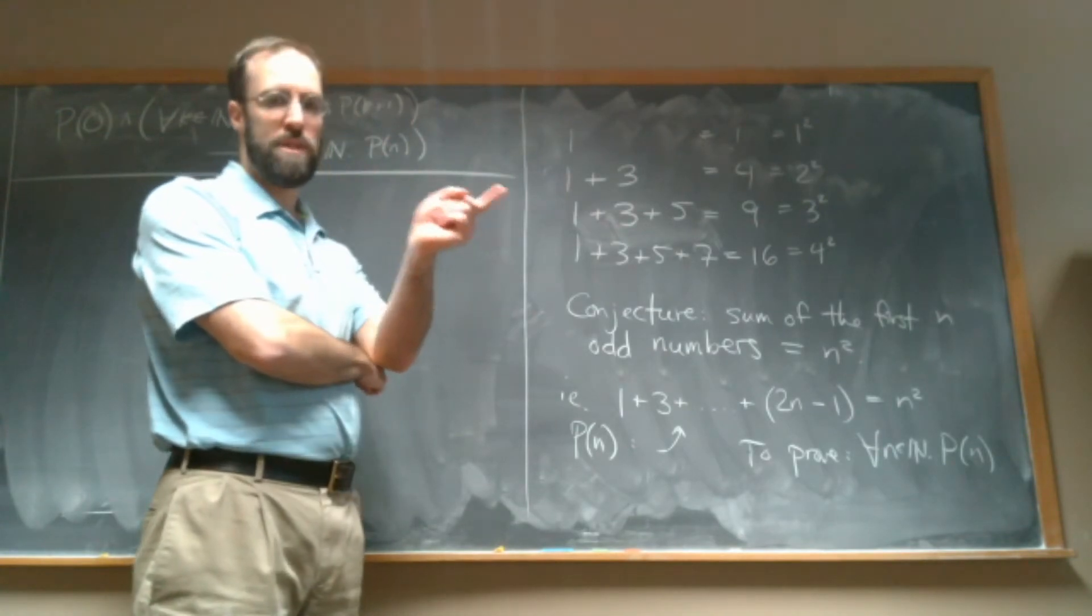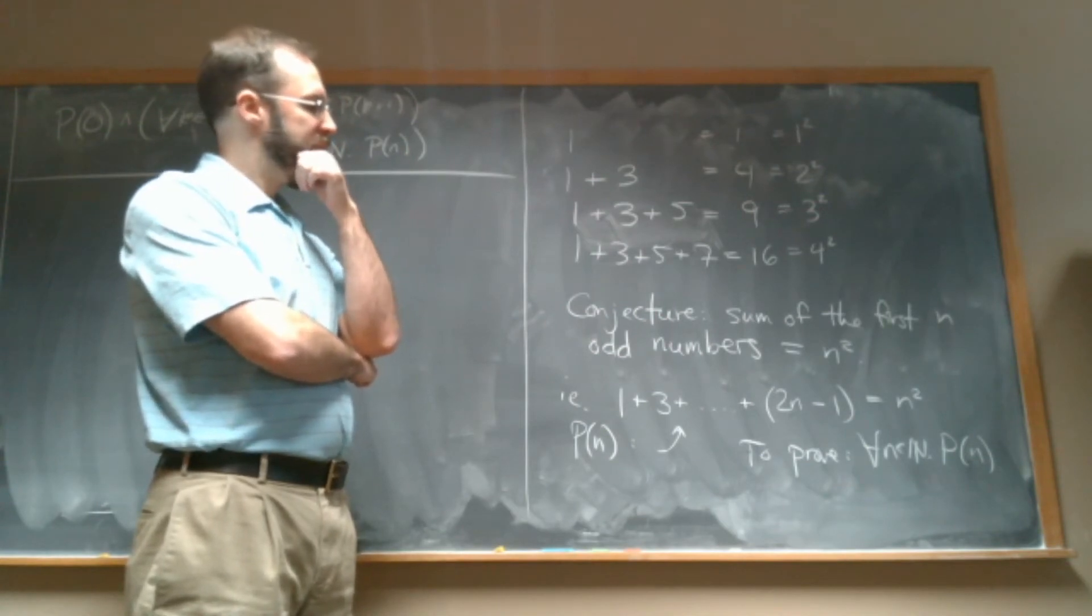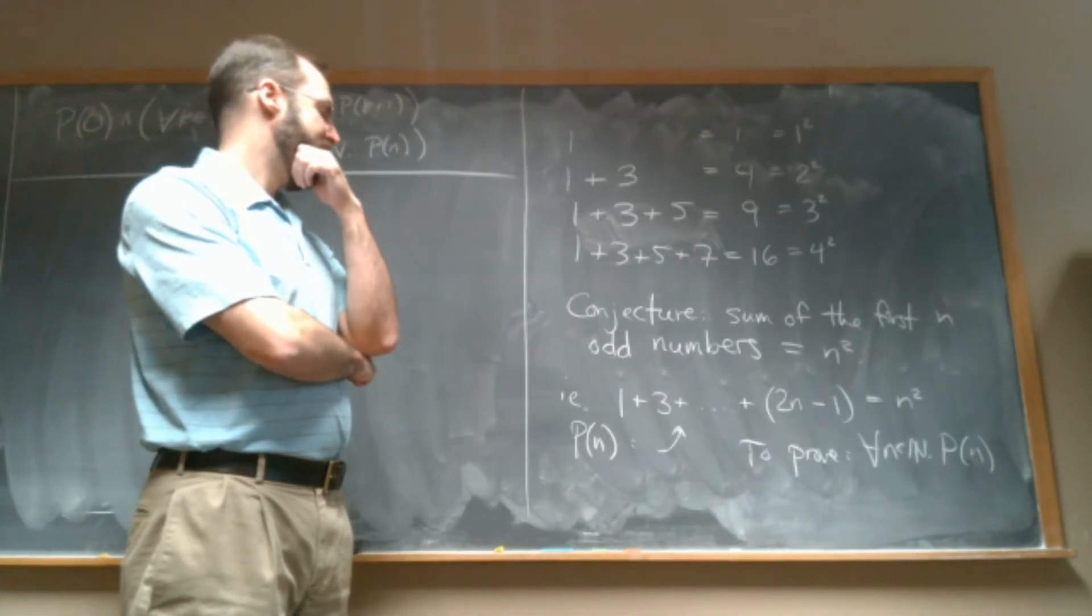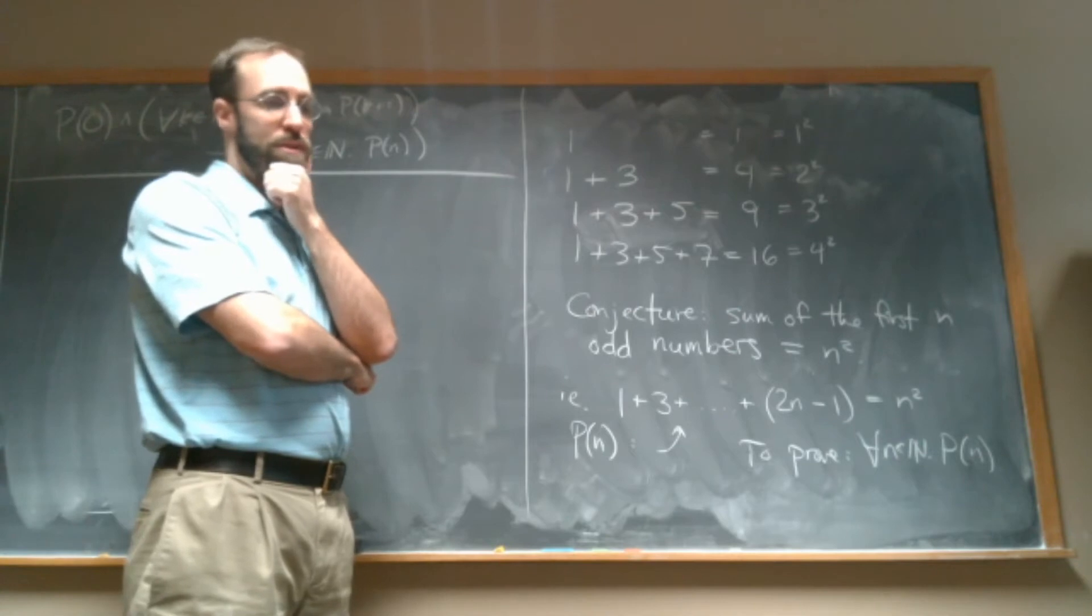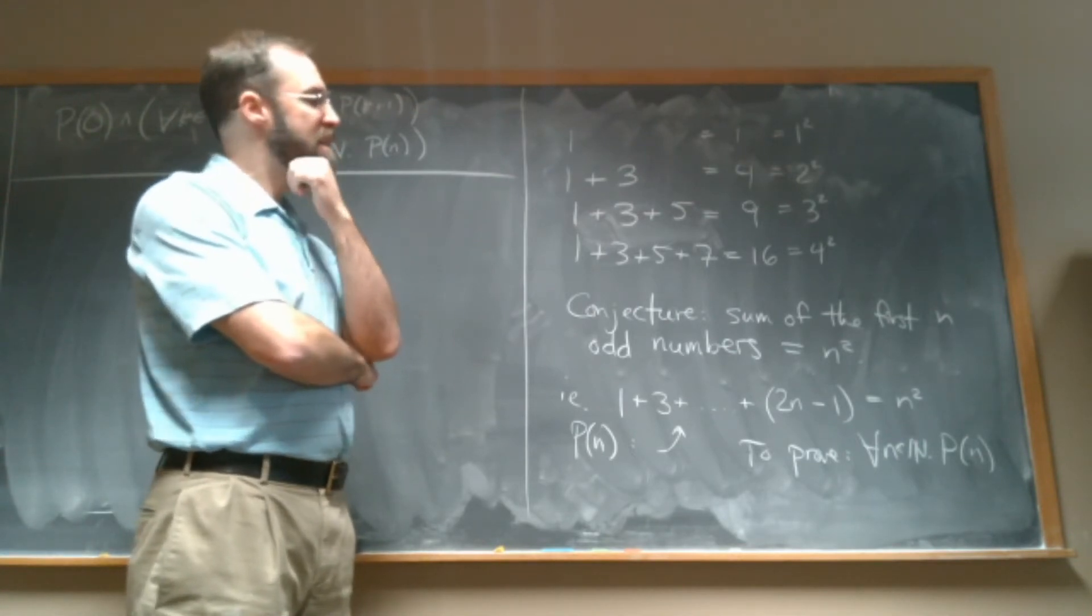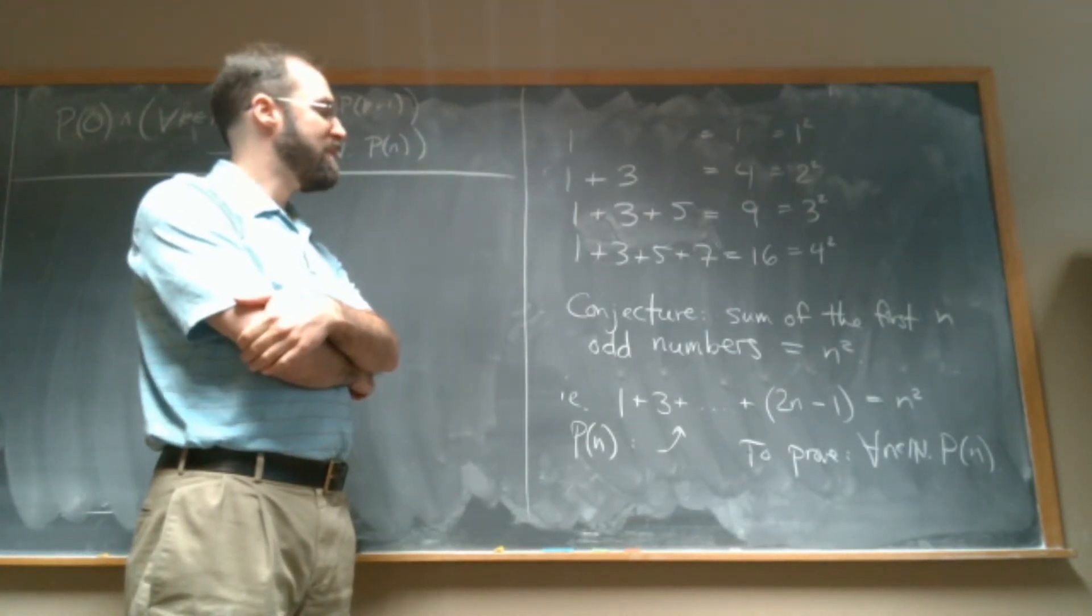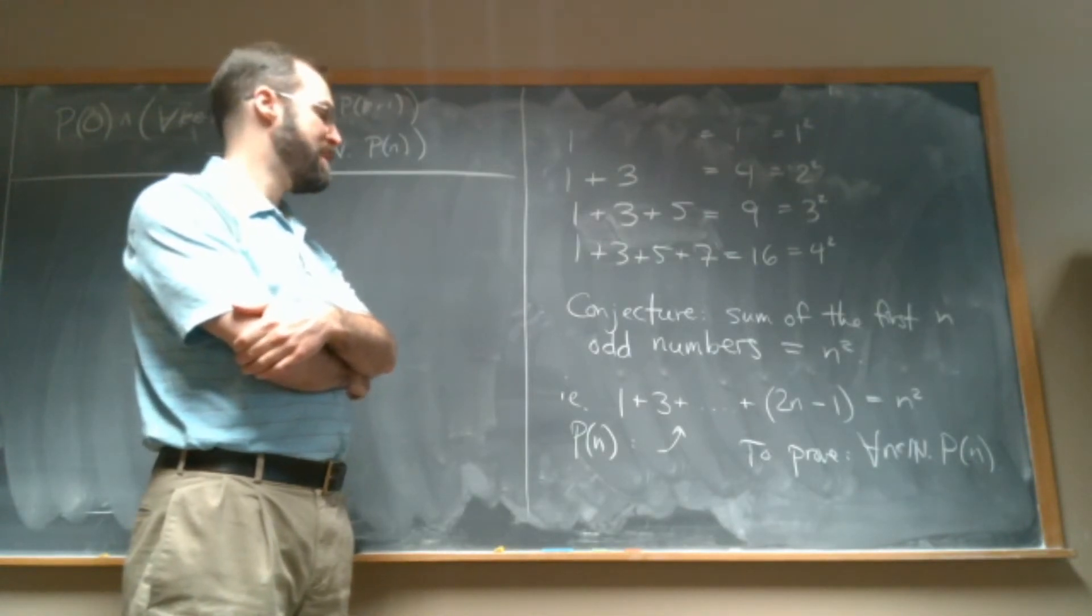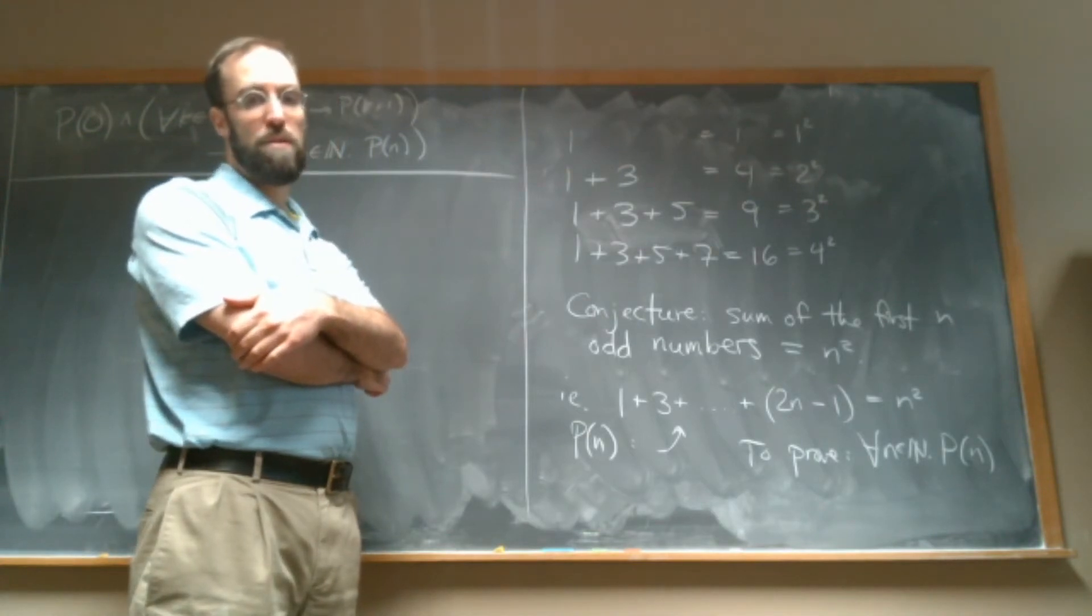One thing we should think about, natural numbers include zero. So is this actually true when n is zero? So when n is zero, this says the sum of the first zero odd numbers should be zero squared. And I would say that's true. So if we add up no numbers at all, we get zero. So the first zero odd numbers, their sum would be zero and that is indeed zero squared. So this is even true when n is zero. Okay. So let's see how we can formally prove this by induction.